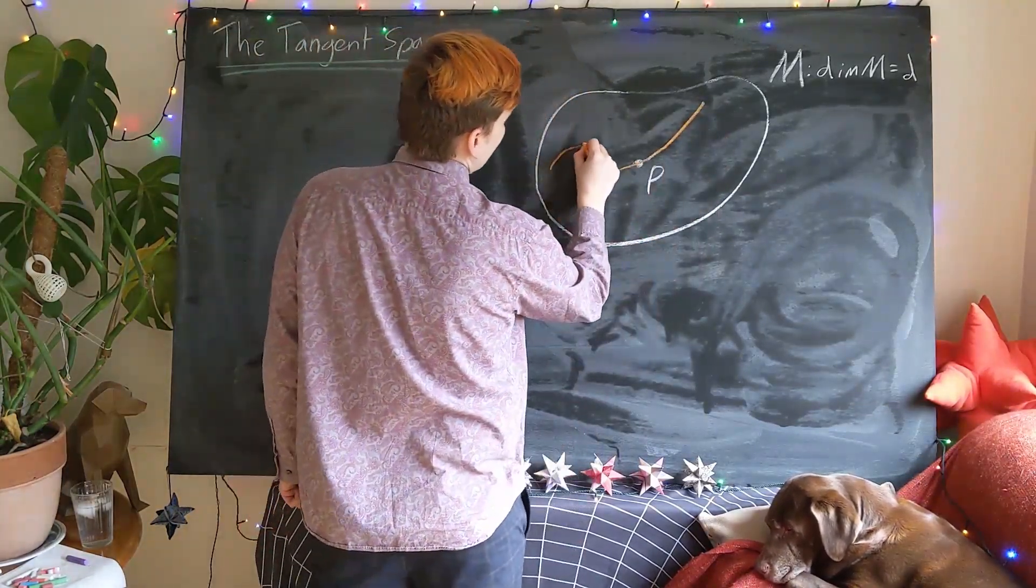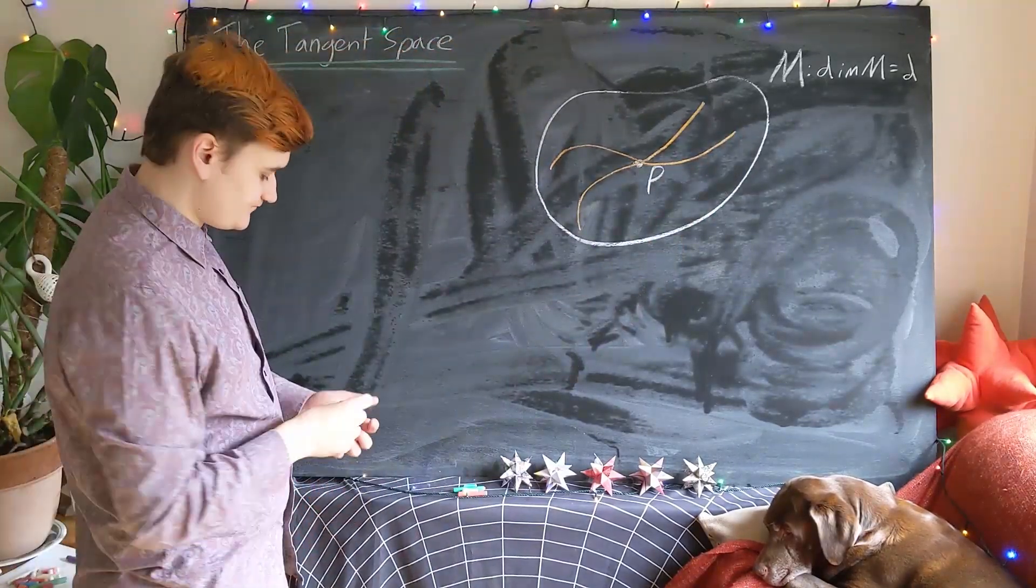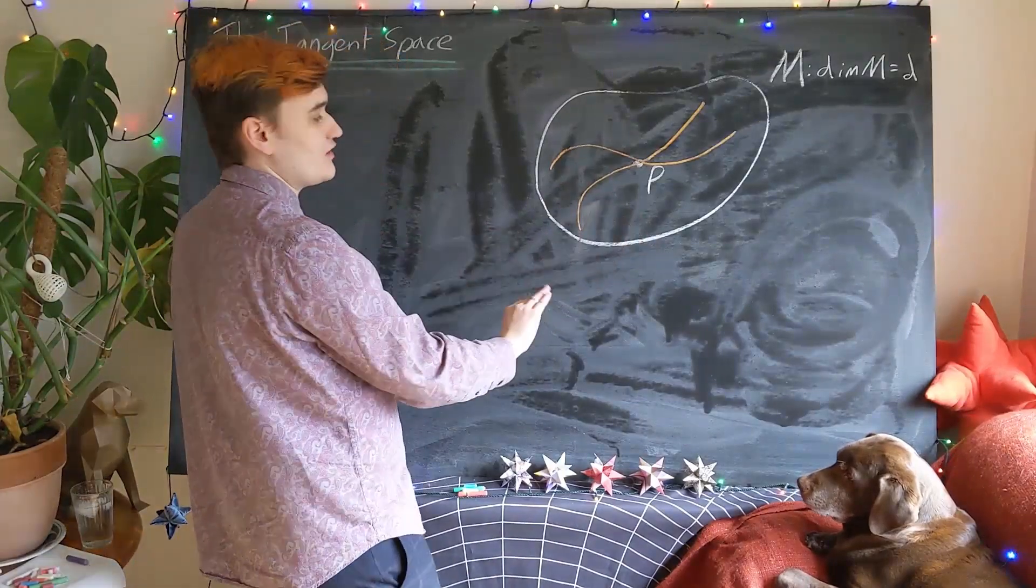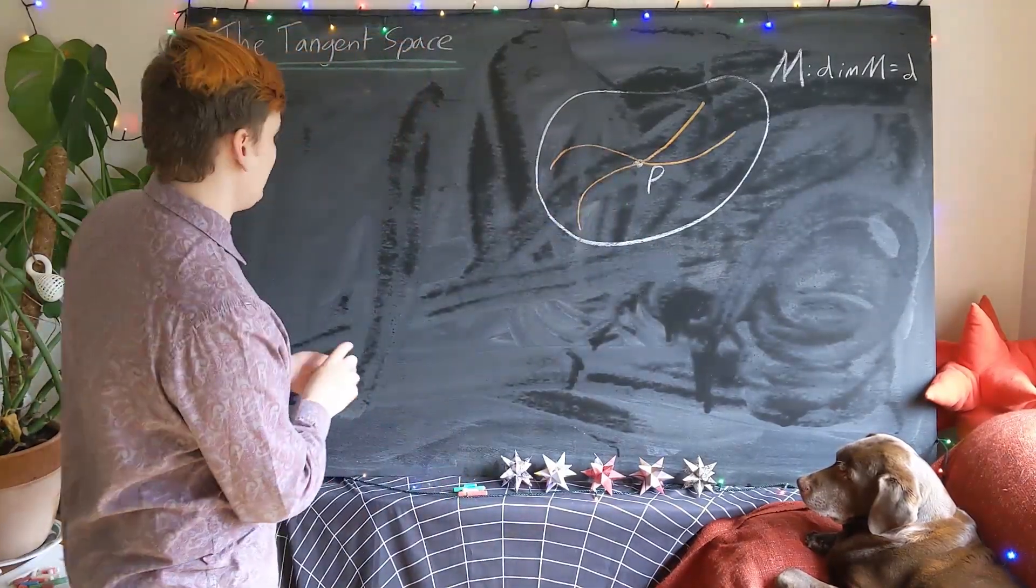there's another, for example. So we consider the set of all possible curves which we could draw that pass through point P.